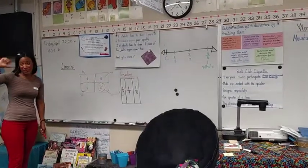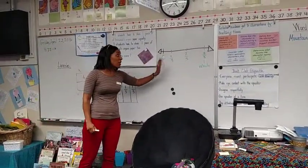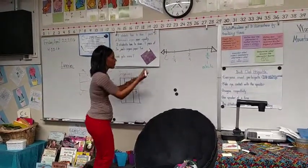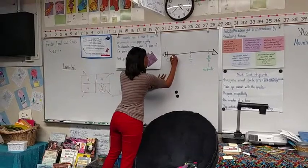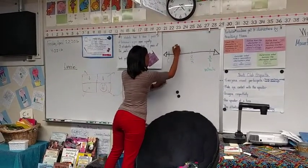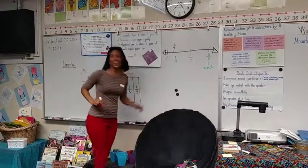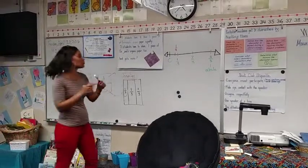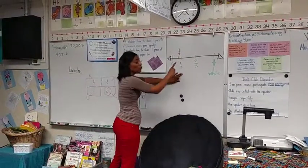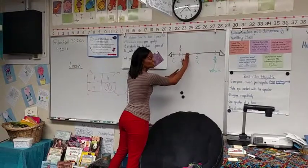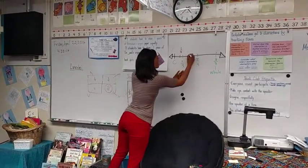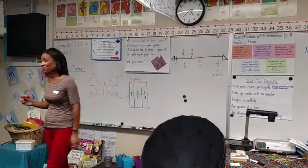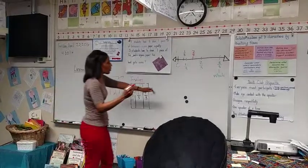One-fourth. Is one-fourth bigger than one-third or less than one-third? Less than one-third. One-fourth would go there. What fraction would come next? Two-fourths. Is two-fourths going to be less than two-thirds or greater than two-thirds? Less. What fraction would come next? Three-fourths.